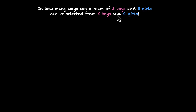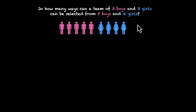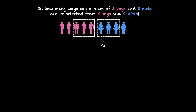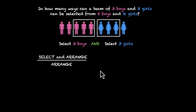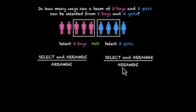We are trying to form a team of three boys and three girls, and we have five boys and four girls. So we have to do two things: we have to select three out of five boys, and we have to select three out of four girls. So: selecting three boys, and selecting three girls. There is an 'and' in between — we're doing both of these tasks.